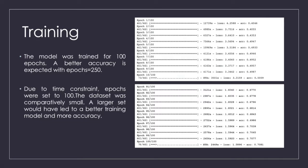The images show the accuracy and loss for first and last 10 epochs. The model was trained for 100 epochs. A better accuracy is expected with epochs equals 250. Due to time constraint, epochs were set to 100. The dataset was comparatively small. A larger set would have led to a better training model and more accuracy.